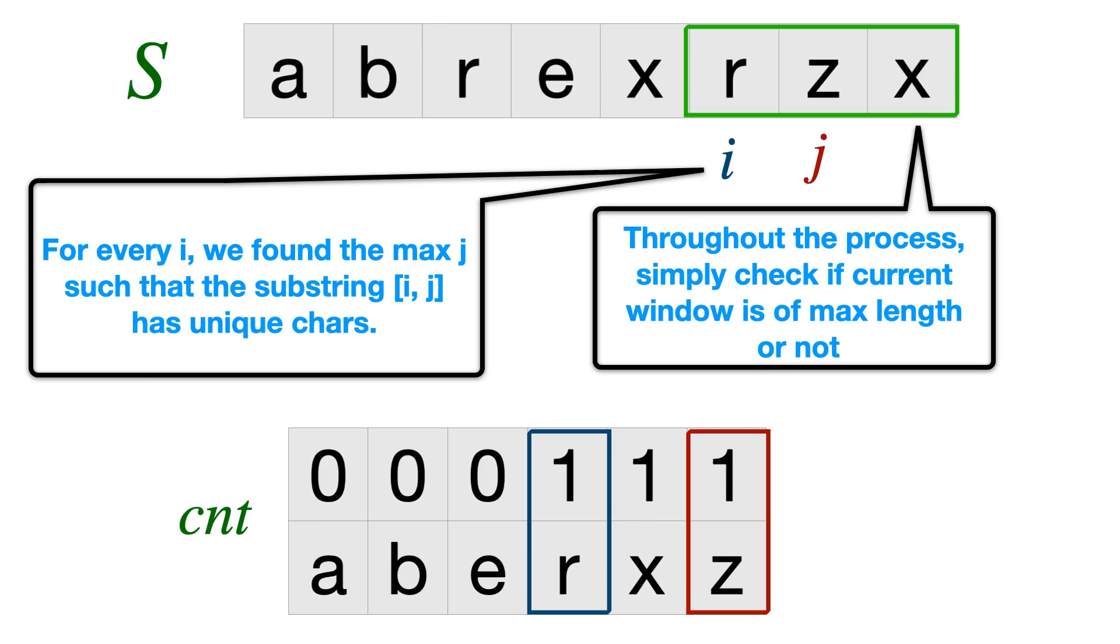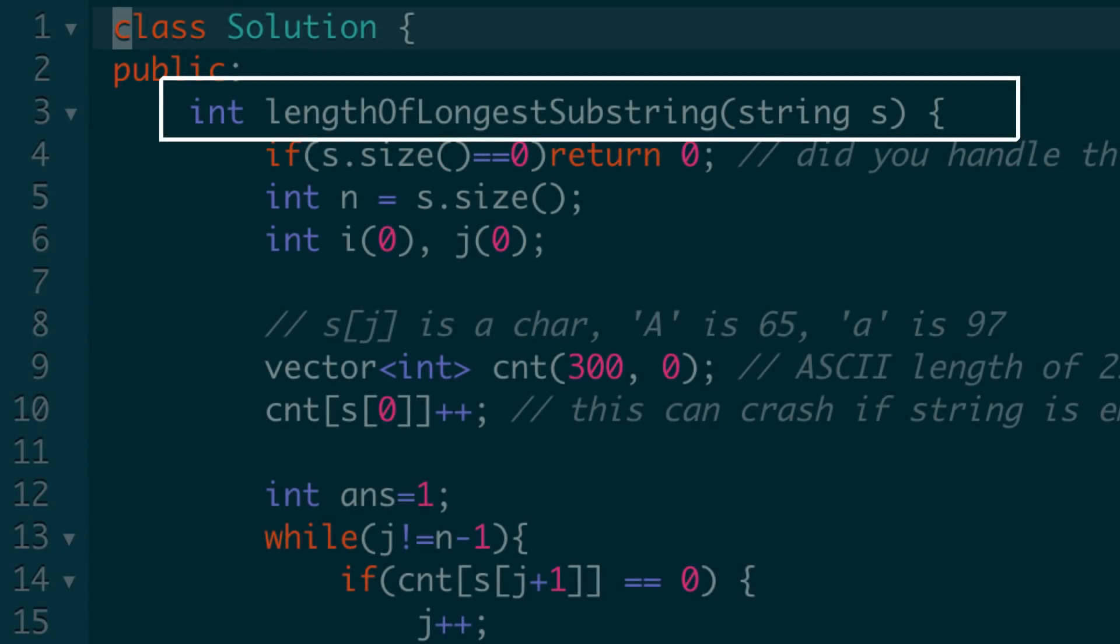And I would really encourage you to not take this very lightly. The implementation of this might be tricky because this window i and j, how you have to move forward when you have to break the loop, it gets really tricky. It has corner cases and I want you to give it a try. I'll give you a walkthrough right now, but I really want you to do this on your own.